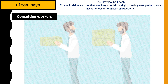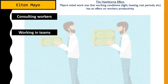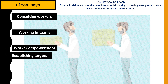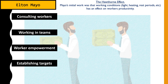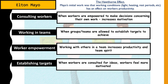Mayo came up with four reasons why workers' motivation was affected. He found that workers were not consulted, they did not work in teams, they were not empowered, and they were not given the ability to establish their own targets. The descriptions will now appear on screen, and I'd like you to take about a minute to match the correct interpretation to the correct solution — the descriptions are jumbled up. We'll check your answers in the next slide.